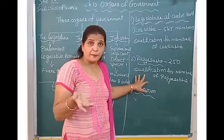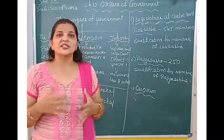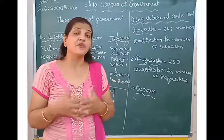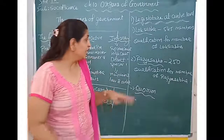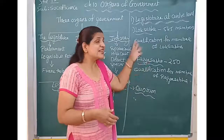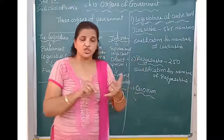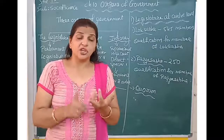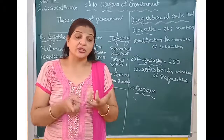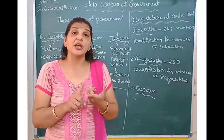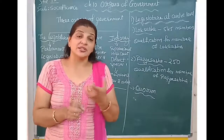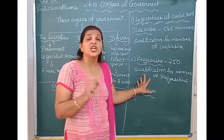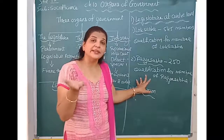Rajya Sabha is known as the upper house. It is a permanent house — it does not dissolve. Only one third of its members retire every 2 years, and its tenure is of 6 years. Qualification for Rajya Sabha members: he or she should be a citizen of India, should not have a criminal background, should not be insolvent, should not have mental imbalance, should not be a central or state government employee, and the age should be 30 years or more.